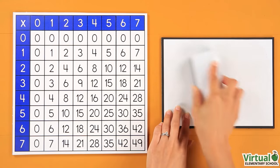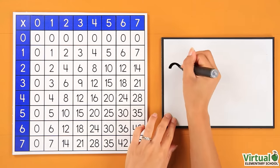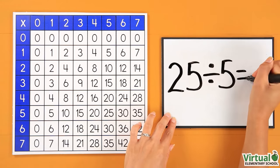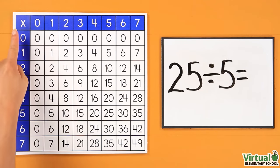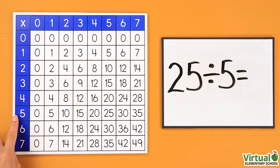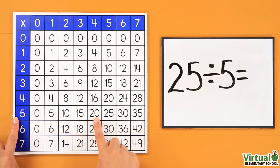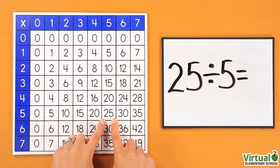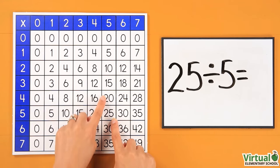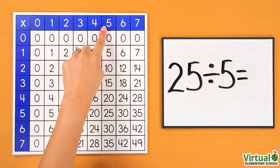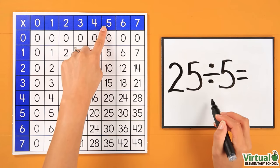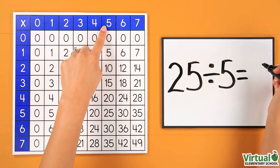Let's try one more. What is 25 divided by 5? Find the second number in the equation, 5, in the first column. Move across the row to the first number in the equation, 25. From 25, move up the column to the top number, 5. This means that 25 divided by 5 equals 5.